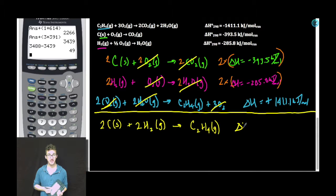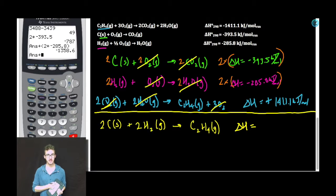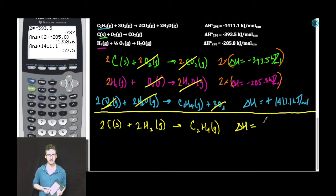So I've recreated my formation equation of ethene. To determine the enthalpy change for this reaction, I'm just going to sum together all the enthalpies from the equations that I've manipulated above. That gets me to 52.5 kilojoules per mole as the enthalpy change for this heat of formation reaction. And we are done.